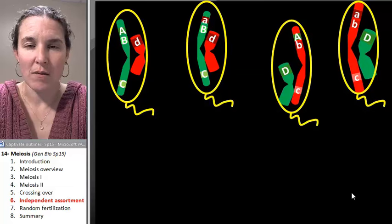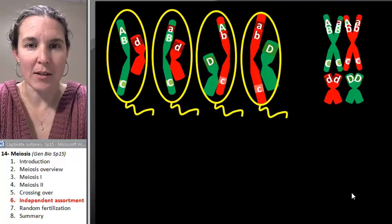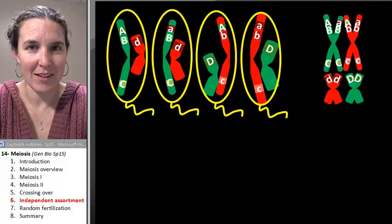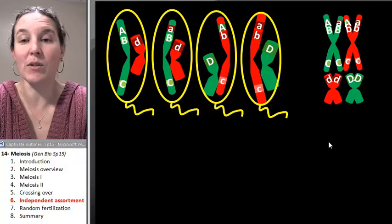All right. Watch and be amazed. There are some little sperms with sperm tails. This was my lineup. This is how they lined up on the metaphase plate. These were the gametes that resulted.